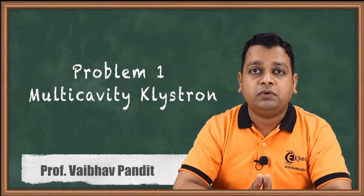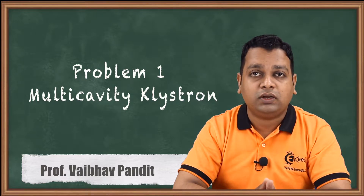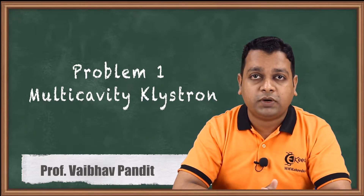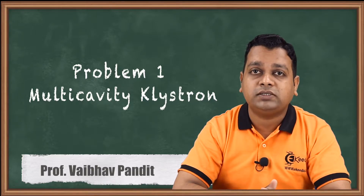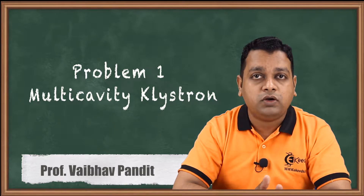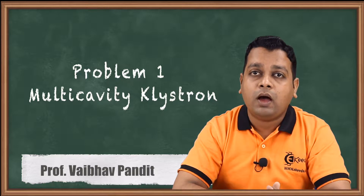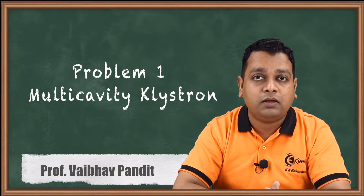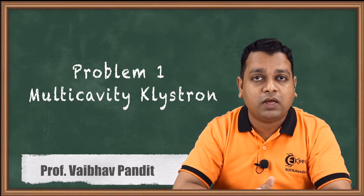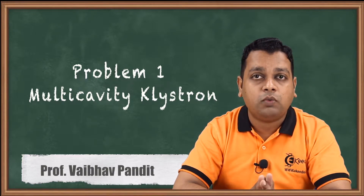In this chapter, Microwave Linear Beam Tubes, we are discussing the very popular microwave tube, i.e., the 2-cavity klystron. We have seen velocity modulation as the principle of operation of this tube, and based on the formulae, we have solved problems 1 to 4 for 2-cavity klystron, calculating various parameters. After the 2-cavity klystron working as an amplifier to achieve higher gain, we covered multi-cavity klystron. Let us have problem number 1.